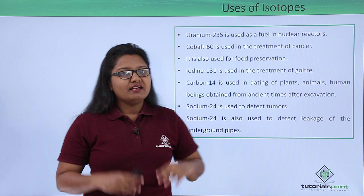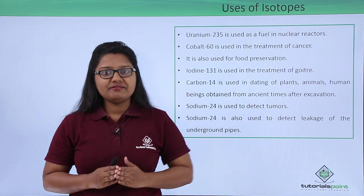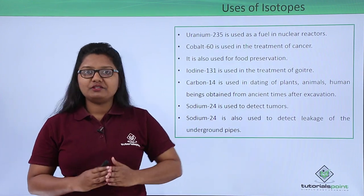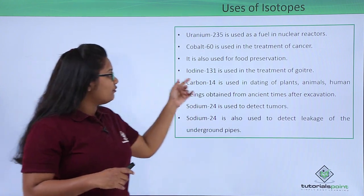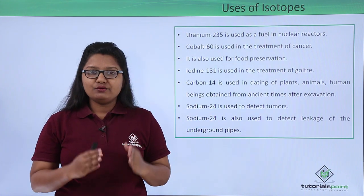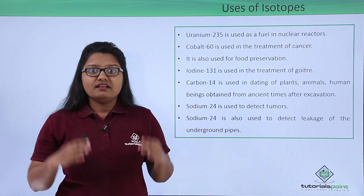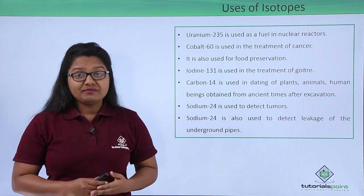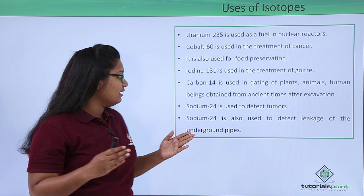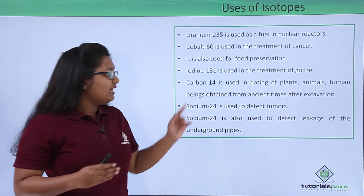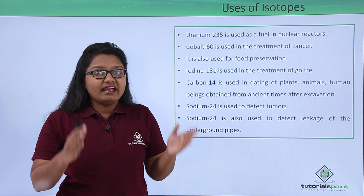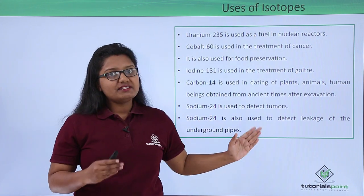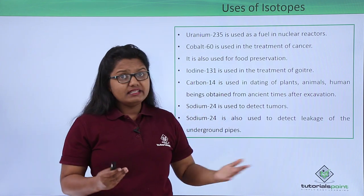Isotopes have many applications in daily life. An isotope of uranium, uranium-235, is used as fuel for nuclear reactors. Cobalt-60 is used for the treatment of cancer and for food preservation. Iodine-131 is used for the treatment of goiter, a disease caused by iodine deficiency. Carbon-14 is used for dating plants, animals, and human beings after excavation — a process that lets us know the exact age of a body. Sodium-24 is used to detect tumors as well as leakage in underground pipes.